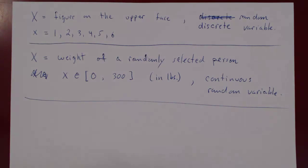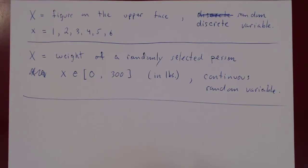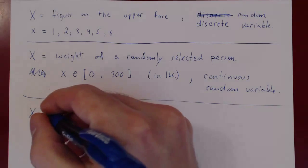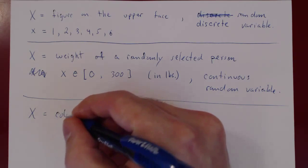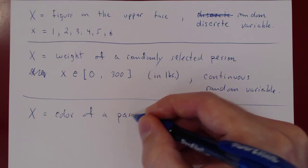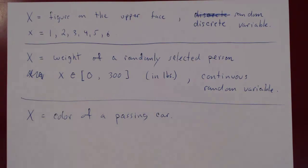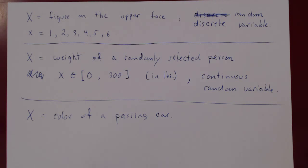What if you're standing by a road, looking at cars driving by, and you record the color of the car? So X would be the color of a passing car. This is random — as different cars drive by you'll observe different colors. But the problem is that the values you would write down would not be numbers: you'd write down red, blue, green, yellow, brown, black, white. They're not numbers, and a random variable must be a variable that randomly takes numbers as values.